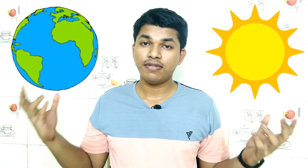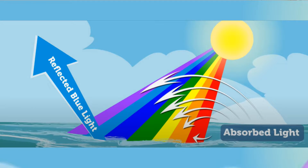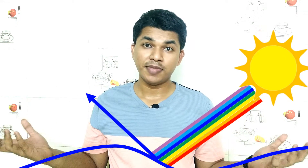The seven colors of light fall on the entire earth. When the light rays fall on the sea, most of the colors are absorbed by the seawater — that is green, yellow, orange, and red colors are absorbed by the water molecules present in the sea. The remaining colors, like violet, indigo, and blue, remain unabsorbed by the seawater.